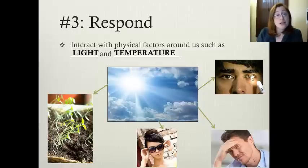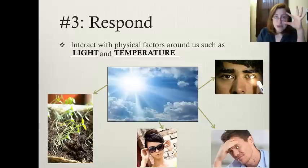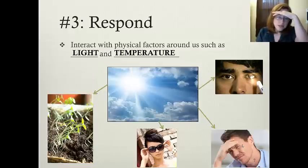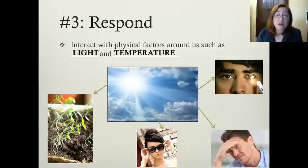We can also have behavioral responses to light. For example, squinting is another way you can reduce the amount of light by physically closing your eyelids or putting your hand up to shade the amount of light coming into your eyes. You can also put on sunglasses, use the brim of a hat, or simply move out of the light. There are lots of different ways that we as humans can respond.